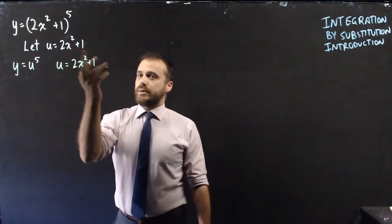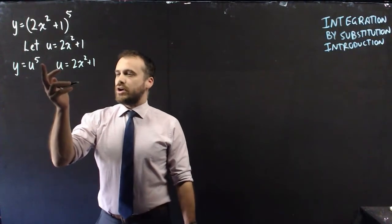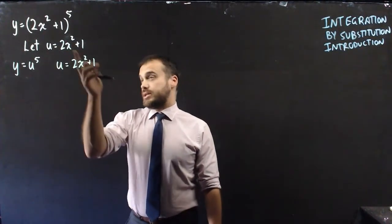If we let u equal 2x² + 1 that means that y is now u^5 and u is now 2x² + 1.